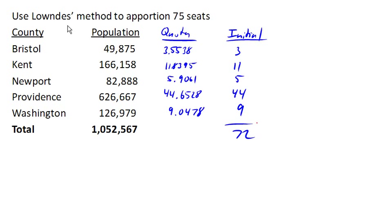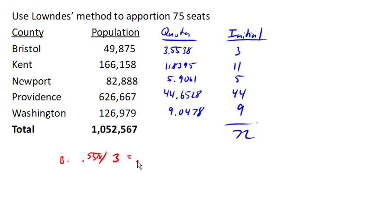In Lowndes' method, to decide where to allocate those three extra seats, we need to figure out the ratio of the decimal part to the whole part of the quota. So we take the .5538 and divide it by the whole part 3, and we get .1846 for Bristol. For Kent, we got .8395 divided by 11, and that's .0763.